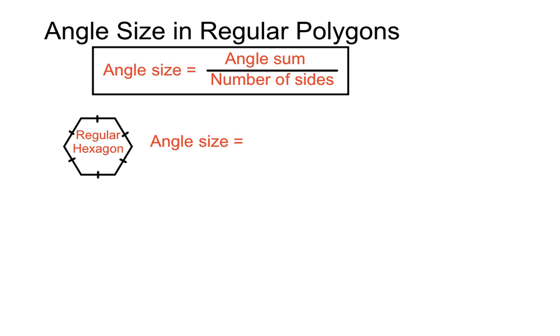Regular hexagon. We have an angle size of 720 degrees. Well, the angle sum is 720 degrees. And we have six sides and six angles. So we'll divide that in. And we'll figure out that the size of each angle on that regular hexagon is 120 degrees.